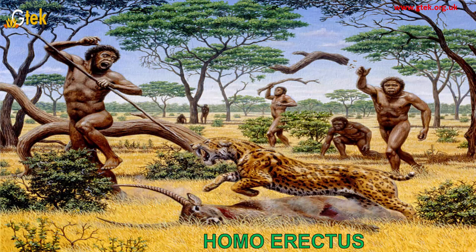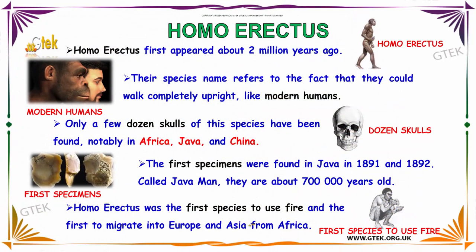Now let us see about Homo erectus. Homo erectus first appeared about 2 million years ago. Their name refers to the fact that they could walk completely upright, like modern humans. Only a few dozen skulls of this species have been found, notably in Africa, Java, and China. The first specimens were found in Java in 1891 and 1892 — called 'Java Man' — and are about 700,000 years old. Homo erectus was the first species to use fire and the first to migrate into Europe and Asia from Africa.